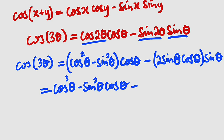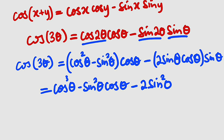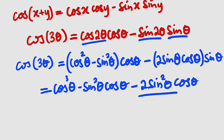Then we have minus 2 sine squared theta cosine theta. We have like terms: negative sine squared theta cosine theta and negative 2 sine squared theta cosine theta, making negative 3 sine squared theta cosine theta altogether.